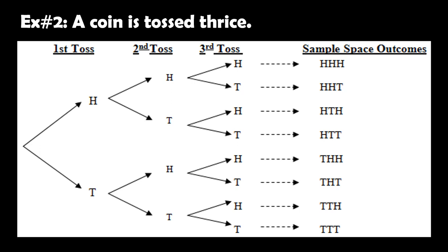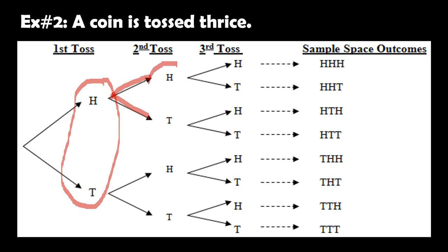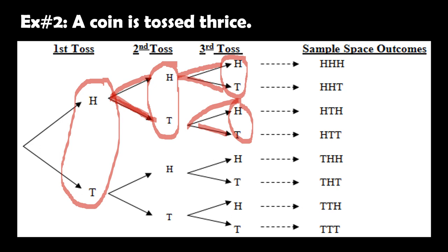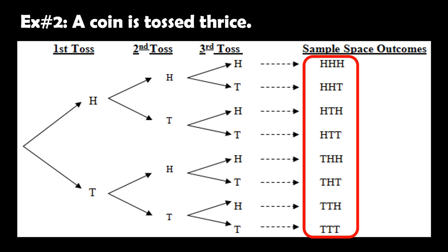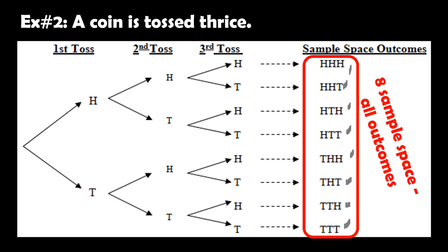Example number two: a coin is tossed thrice. In the first toss, head or tail can come out. If head comes first and you toss again, it's still head or tail. If two heads come out and you toss a third time, again it's head or tail. So the sample space when we toss a coin three times is 8.